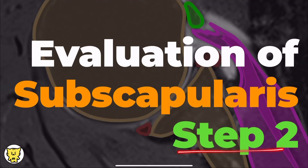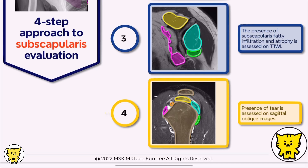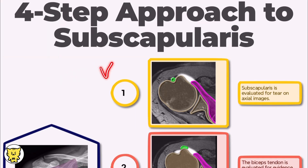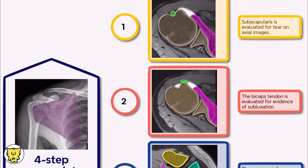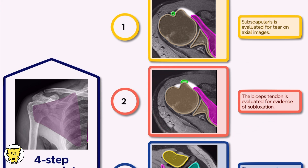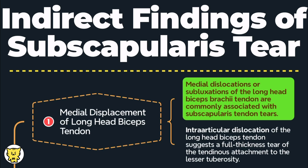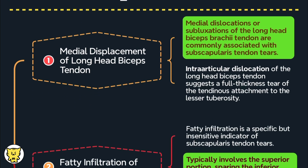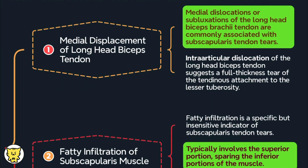Today we're diving into our second session about how to spot subscapularis tears when looking at axial images. On axial images, medial displacement of the long head of the biceps tendon is most commonly associated with subscapularis tendon tears.